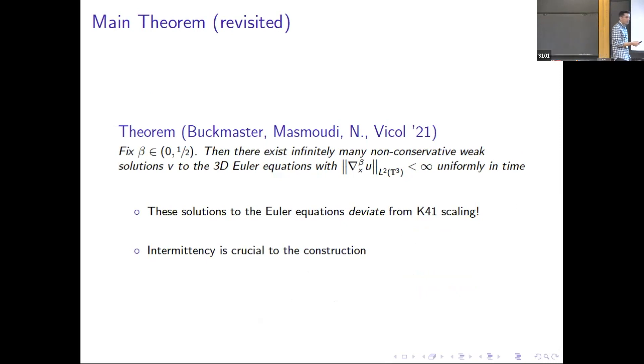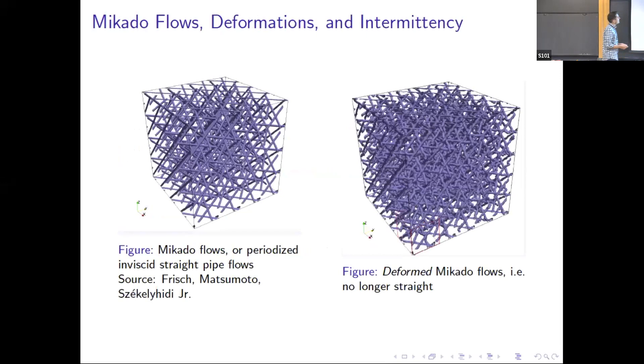It turns out that intermittency is crucial to the construction in analytical ways. We do estimates, but sometimes you get to draw pictures too. One way that intermittency enters is you have these big tangled messes of periodized cylinders that Xiao Yitao mentioned. At one point in the iteration, one has different sets of these objects, and they're deformed and moved around, and you want to prevent them from intersecting in some region of space-time. It's not hard to imagine that the sparser these objects are, the easier it is to prevent intersections. So that's part of what intermittency has to do with the construction.